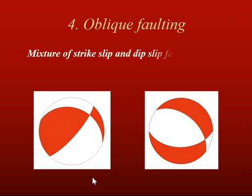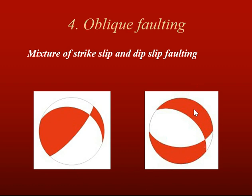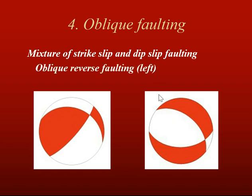Last is oblique faulting, where we get a mixture of strike-slip and dip-slip faulting. Instead of a simple pattern, the plane is dipped a little bit, giving you a combination — for instance, primarily a reverse fault with a little bit of strike-slip that brings things in from the edge. Similarly, you can have primarily a normal fault with a little bit of strike-slip motion. These are called oblique reverse faulting and oblique normal faulting respectively.